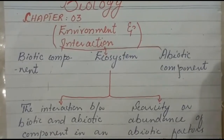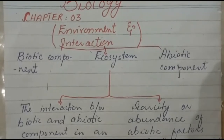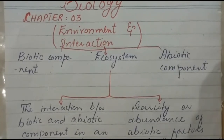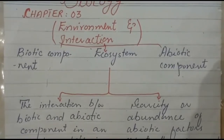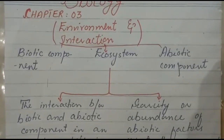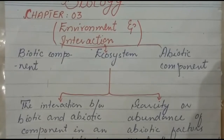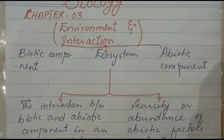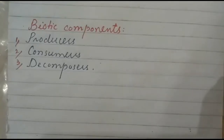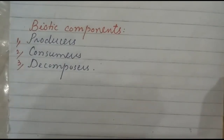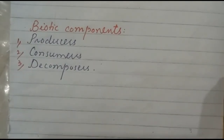All these abiotic factors determine the conditions in which living beings survive. Abiotic factors include soil, air, water, temperature, and wind. The main decomposers are bacteria and fungi, which break down and decompose material.